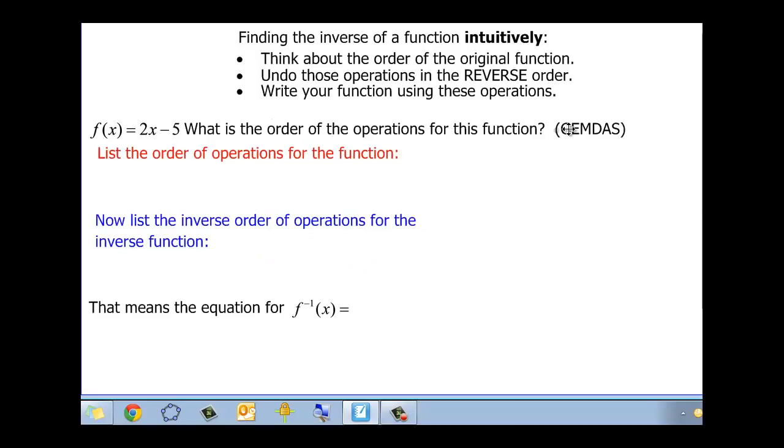What is the order of operations for this function? Remember GEMDAS? You got your grouping symbols, exponents, multiply, divide, add and subtract. So the first thing we do to this x is that we multiply by two. And then the second thing we do is to subtract the five. So let's list the inverse order of operations for the inverse. Remember with the coat and the hanger, we started with the last thing. I zipped my coat up, the last thing in the function, but I unzipped it in the inverse function. So I'm going to do the opposite operation, add five. And then I'm going to not multiply by two, but divide by two.